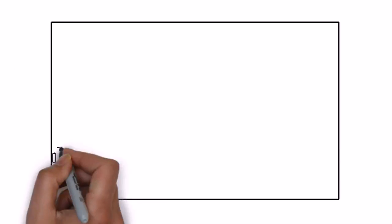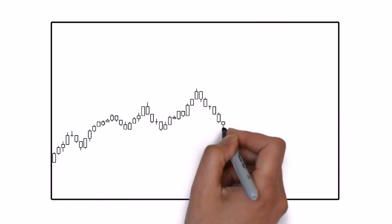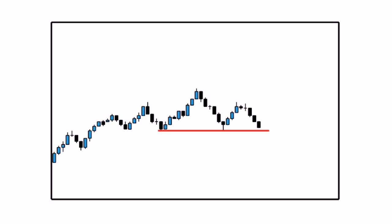The second is a horizontal neckline. This is my favorite one because, as we have said in our previous videos, diagonal support and resistance levels are very subjective, and only a horizontal neckline will appear on your chart the same as on any other trader's charts.